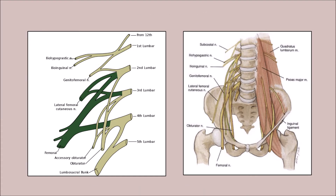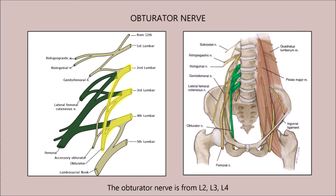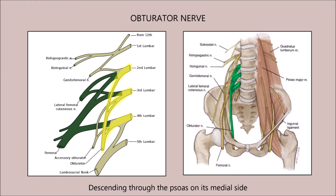The obturator nerve is from L2, 3, 4 — it innervates the thigh, adductors and much more. Descending through the psoas on its medial side, and giving sensory branches to the medial thigh.